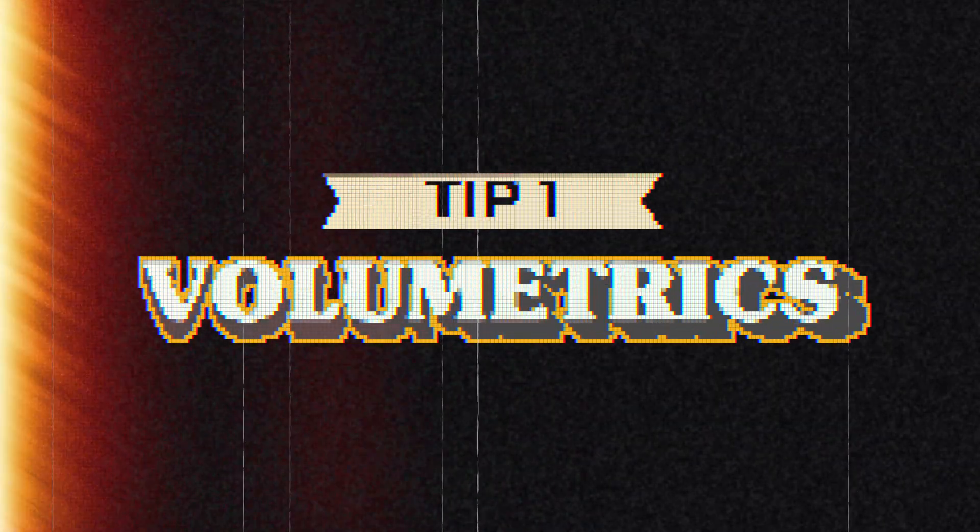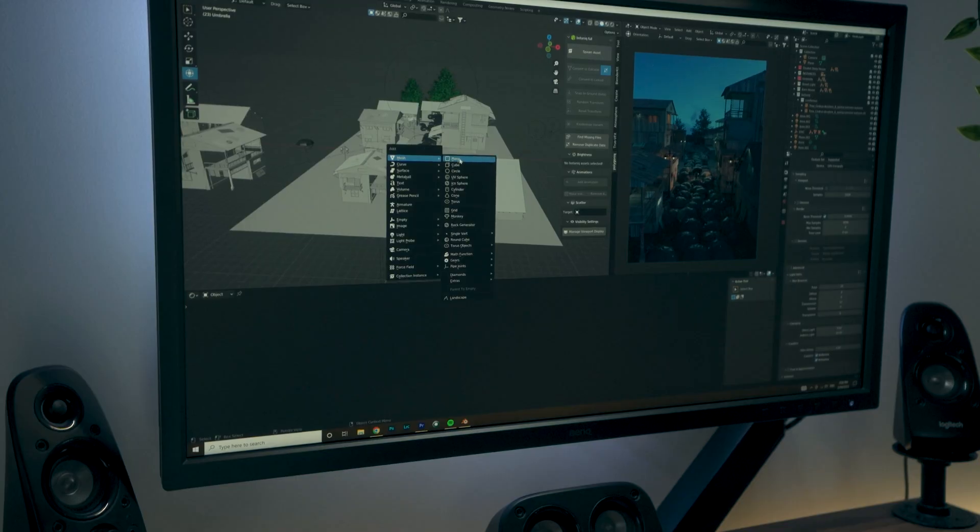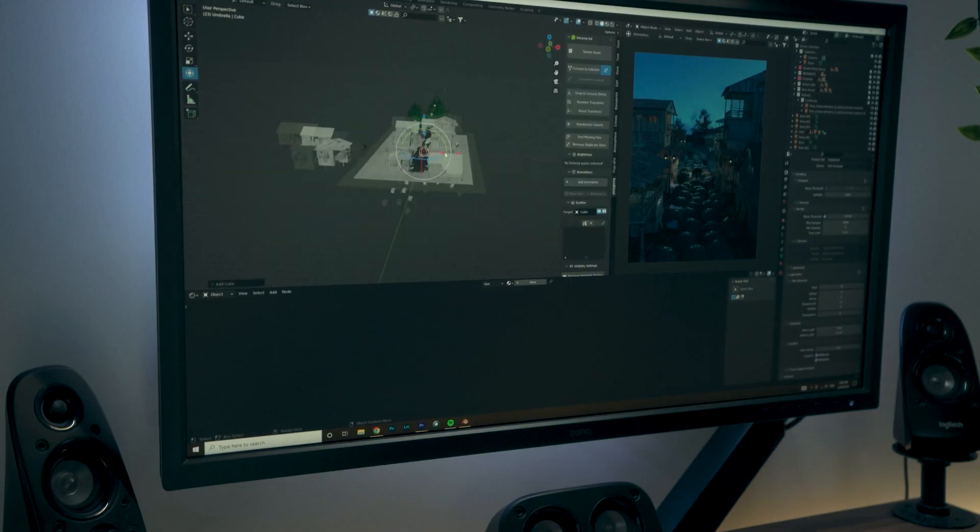Starting with number one, which is the most crucial: volumetrics. One of the key things that the majority of cinematic films incorporate within their scenes is haze or volumetrics. By doing this it absorbs the light within your scene and gives your scene a sense of atmosphere.